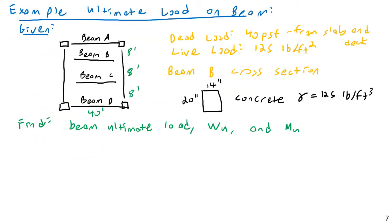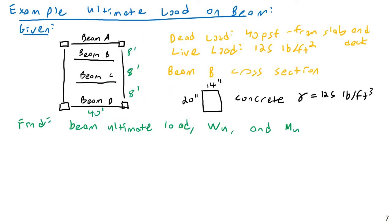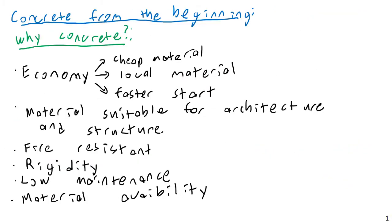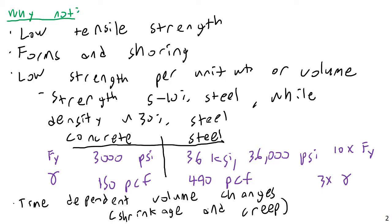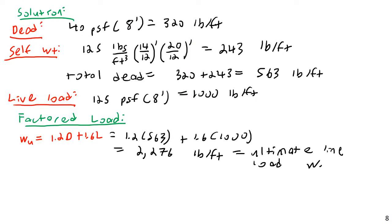In the first portion of the lecture, we looked at a discussion of the properties of concrete and how it behaves. In the second portion, we reviewed how to do, at a very basic level, beam load collection, load factoring, etc. Now for part three, I'd like to go over the very basics of reinforced concrete beam design. All this is going to come out of the ACI 318-14 code, as we discussed previously.